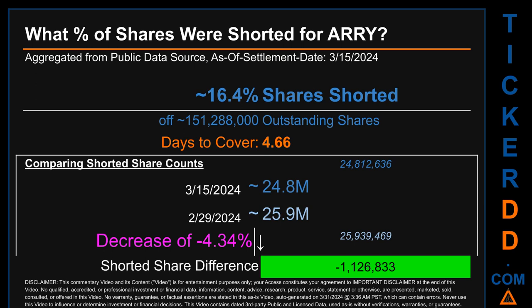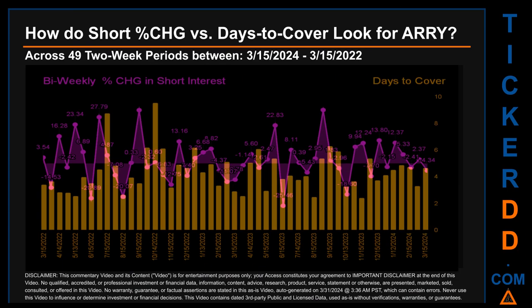Days to cover is 4.66. When I compare the current two-week period data snapshot against the previous period ending on settlement date February 29, 2024, I find that the current snapshot had roughly 1.1 million fewer shares shorted. This means that compared to the previous snapshot, the current snapshot has a decrease of minus 4.34% of shorted shares.